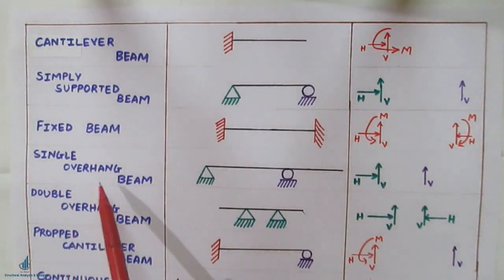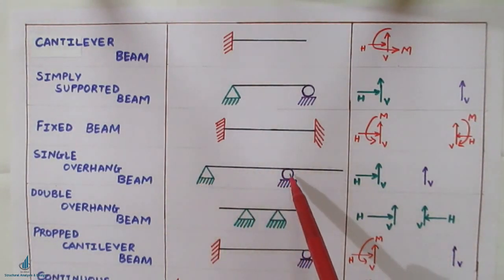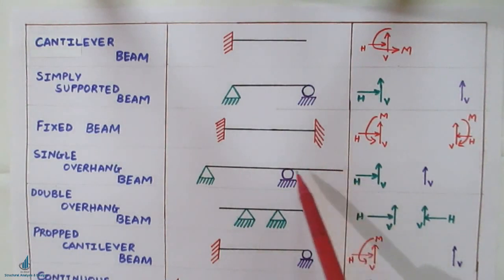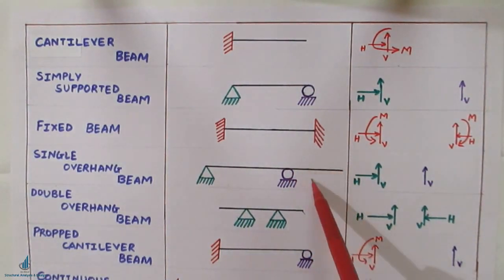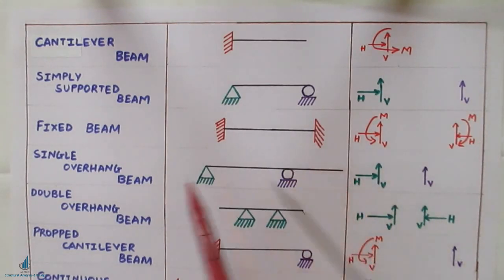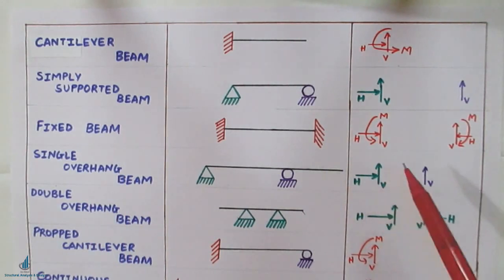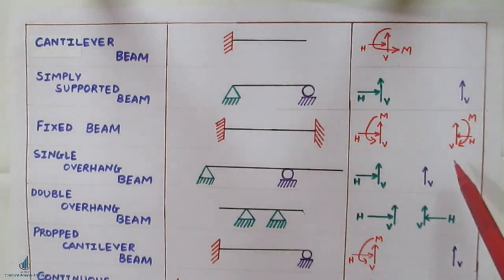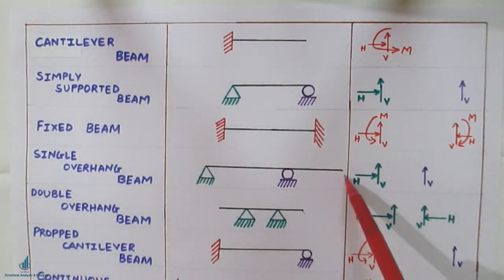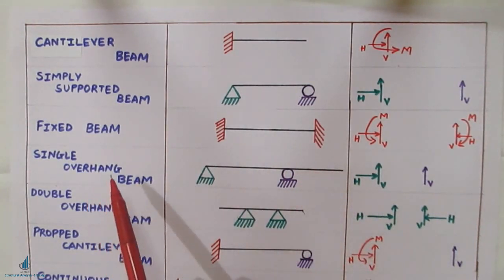Next is the single overhang beam. It is basically a simply supported beam where one part of the beam is unsupported — it has only one overhanging edge. The reactions are the same: the hinge has two reactions (horizontal and vertical) and the roller has one vertical reaction. Because only one edge is hanging, it is known as a single overhang beam.